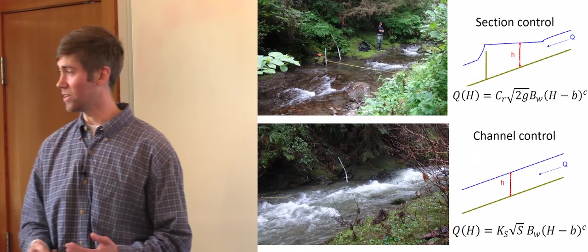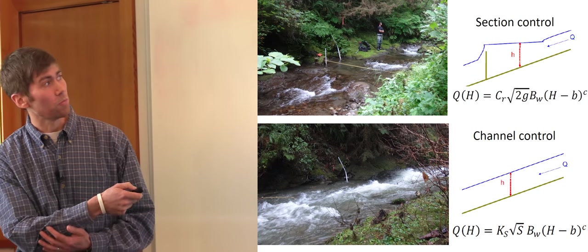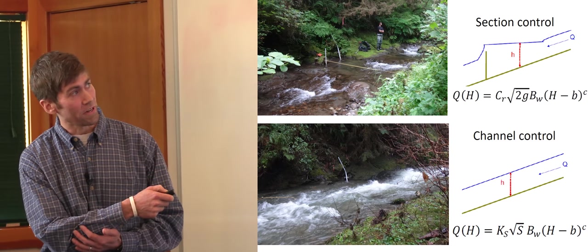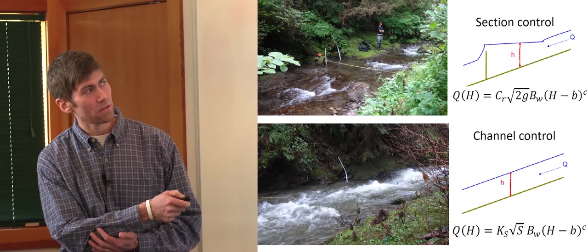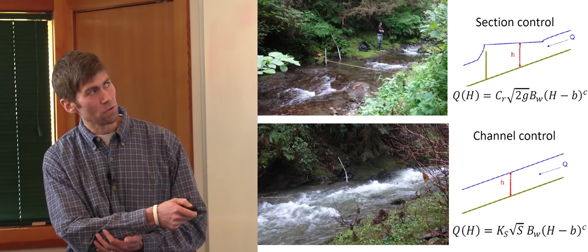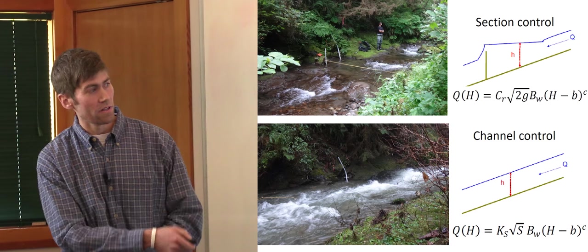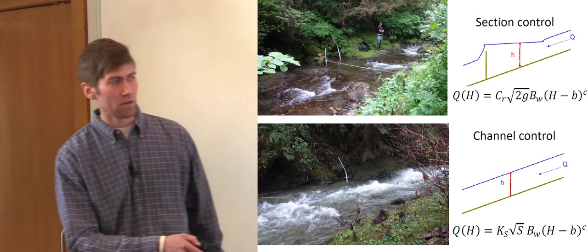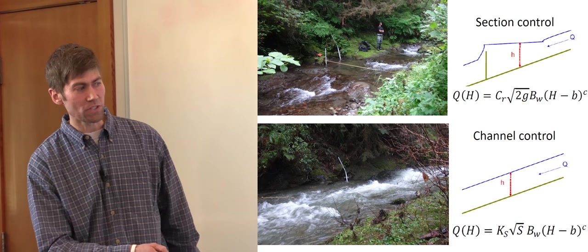So what's that look like in our channels? Here we are in more of a low flow where these boulders and cobbles are creating a flat pool here. And then you have a little fall here, so we can use our section control. Once the stage or the depth of that water gets higher, our water surface is parallel to the bed, and we start using this equation.